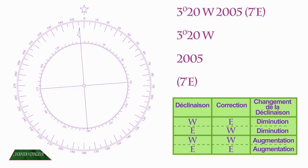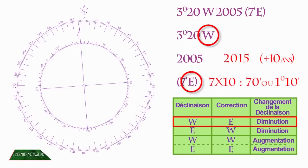Dans notre exemple, nous avons 3 degrés 20 minutes de déclinaison ouest. L'année de référence est 2005 et nous considérons que nous sommes en 2015, soit 10 ans d'écart. Les lettres sont différentes, nous avons donc une diminution de la déclinaison de 7 minutes par an pendant 10 ans, soit 70 minutes ou 1 degré 10 minutes que nous retranchons au 3 degrés 20 minutes, ce qui fait 2 degrés 10 minutes toujours en déclinaison ouest.